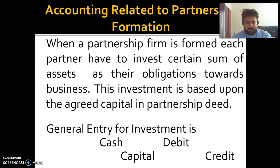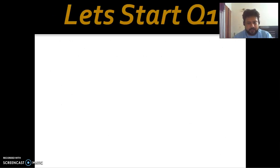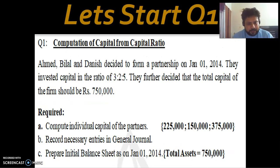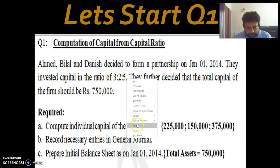Now we will solve the complete question in three steps: first, find the individual capital; second, record the journal entries; third, prepare the balance sheet. Today's question is Question Number 1. Ahmed, Bilal, and Danish decided to form a partnership on January 1, 2014. They agreed to invest capital in the ratio of 3 to 2 to 1.